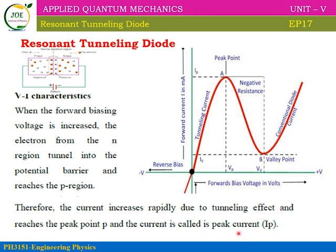This is the tunneling effect. Now, if we increase the battery voltage and measure the current, we can observe the current versus input voltage relationship. This graph shows the V-I characteristic, where the x-axis is voltage and the y-axis is current.